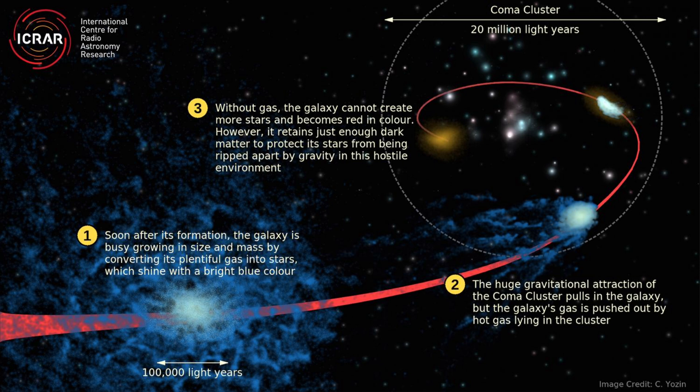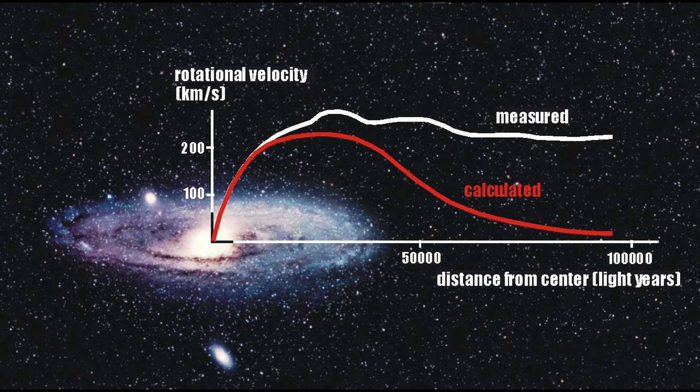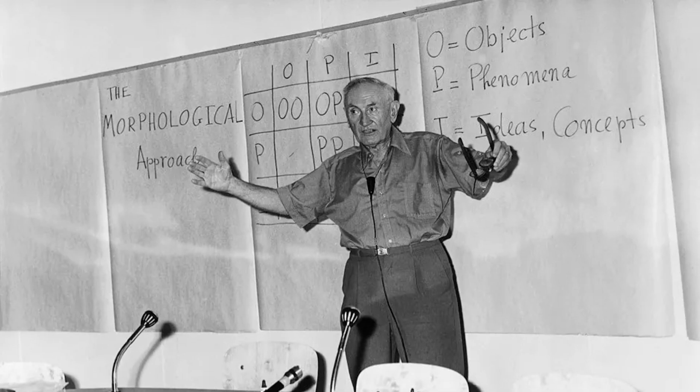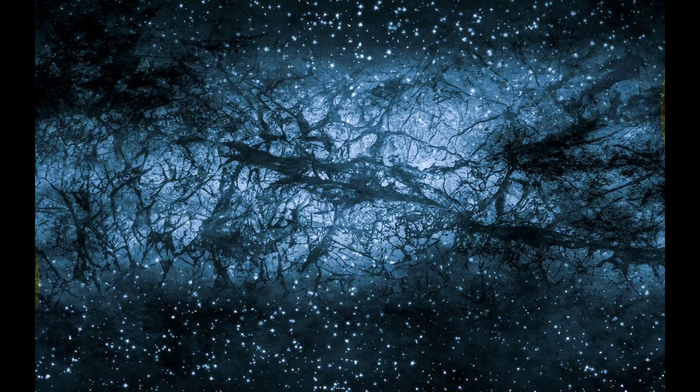The galaxies within the cluster were moving far too quickly for the amount of visible matter they contained. According to Newtonian mechanics, they should have been flying apart, yet they remained gravitationally bound. Zwicky proposed that there must be some missing mass, an unseen force holding these galaxies together. He called this dark matter.